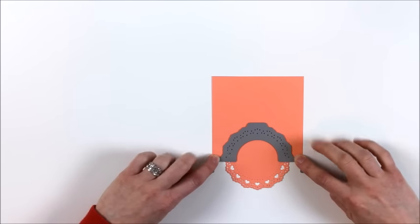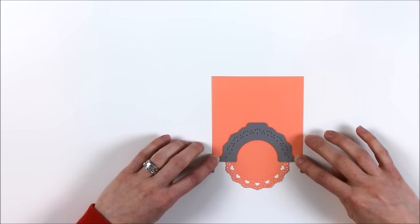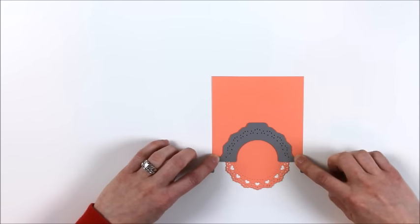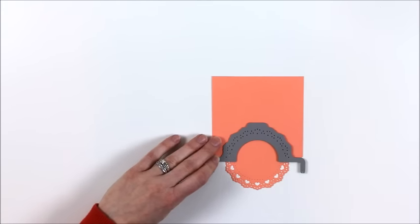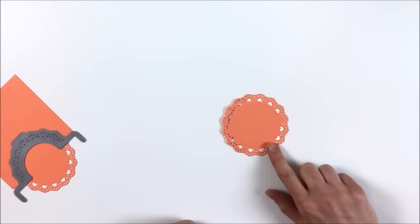I would suggest using post-it tape or a magnetic platform or something to keep that in place and really secure while you send that through again. And if you line that up right there, after it comes out you end up with this really cute full doily.